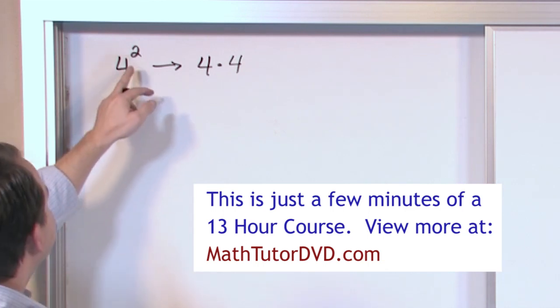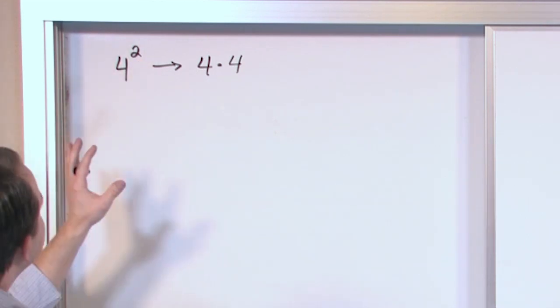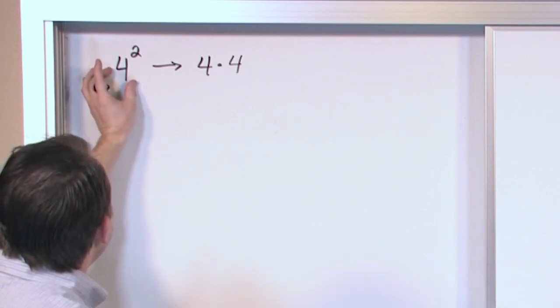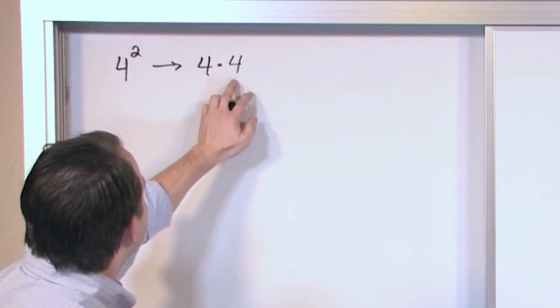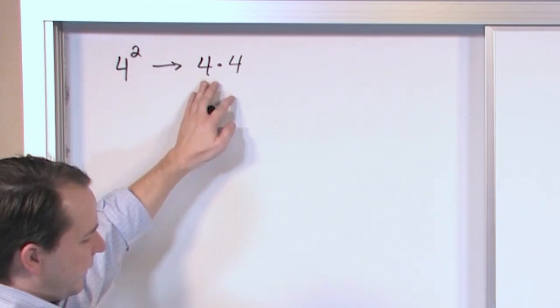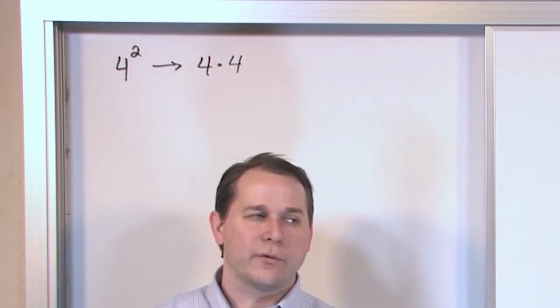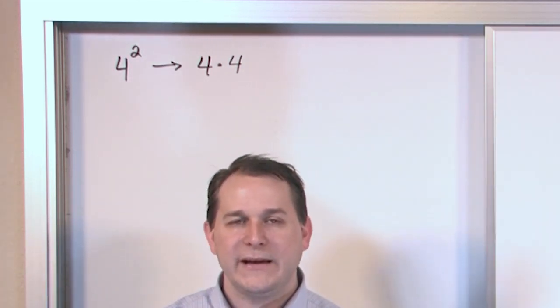So we call this four squared. Anytime you see a two up there, it means squared. It just means that you take the bottom number and you multiply it by itself as many times as is indicated in the exponent. So it's four times four. So in this case, four times four is sixteen. So four squared or four raised to the power of two is sixteen.